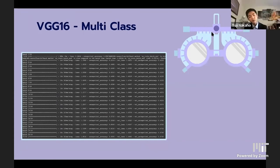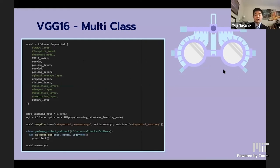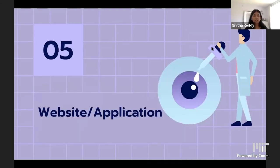The final model we tried was VGG16 for multi-class classification. Our AUC for VGG16 was 0.847 — our best yet. We used 20 epochs and a learning rate of 0.00013. In order to make our model accessible, we decided a web app would be the best option, and this is the prototype we constructed.